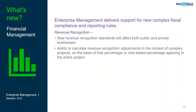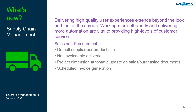Also on the financial management side, you have the capability of looking at revenue recognition. New revenue recognition standards have been introduced for both public and private businesses, with the ability to calculate those entries inside the system and review them against complex projects and various percentage entries across the application. On the supply chain side, sales and procurement have been improved, with default suppliers for product sites, project dimension automatic updates on sales and purchasing documents, and scheduled invoice generation.